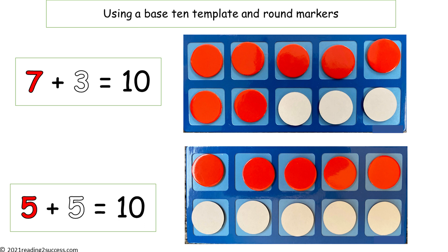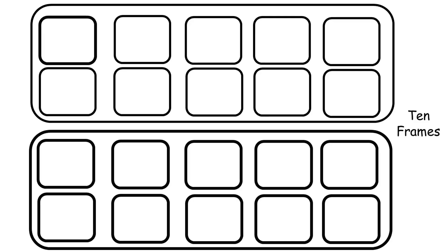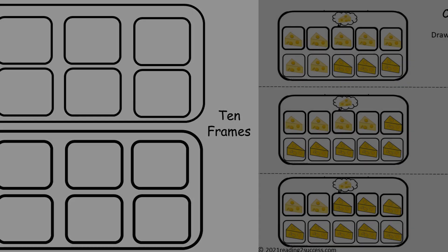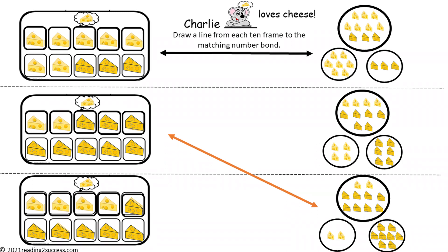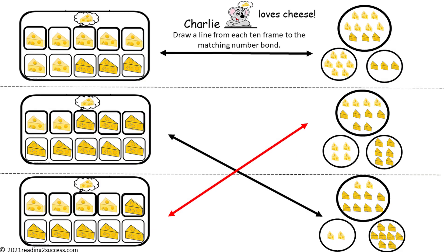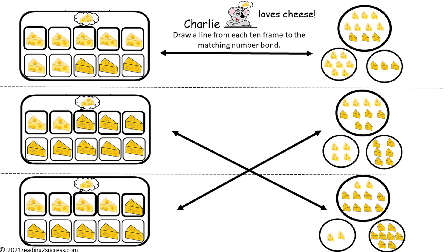A common practice in the classroom is to use base-10 templates and round markers. This is a template for 10 frames that you can print out and use at home with kids. Now have kids draw a line from each 10 frame to the matching number bond: 7 plus 3 equals 10; 2 plus 8 equals 10; and 4 plus 6 equals 10. This is the completed example.